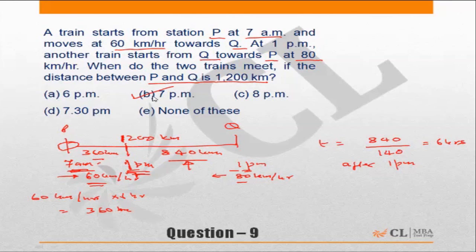The question could also be where will they meet? If the question was where will they meet, in 6 hours the first train from P, the train from P which is going at the speed of 60 km per hour, in 6 hours it will do 360 km. Earlier it had already done 360 km, so it has done a total of 720 km. So your answer could be: they will meet 720 km from P.